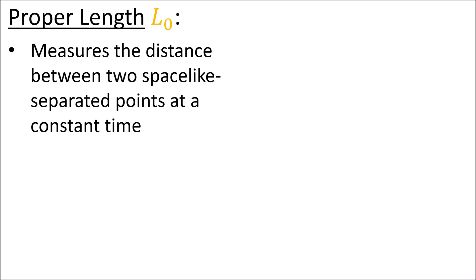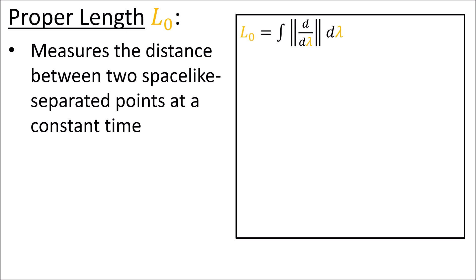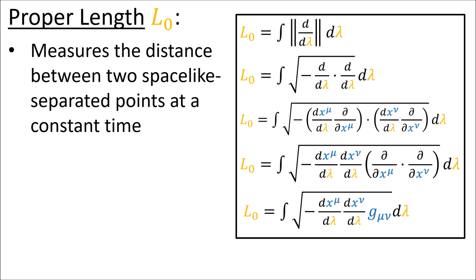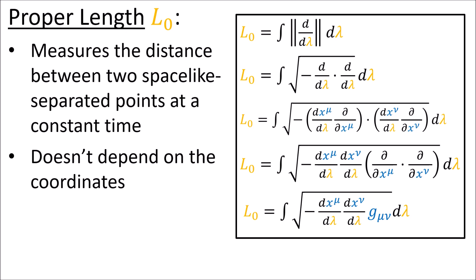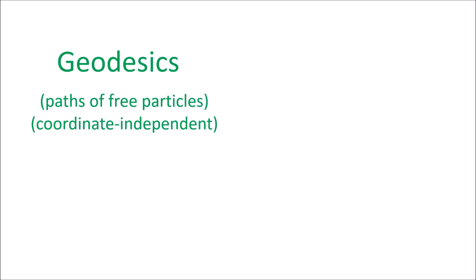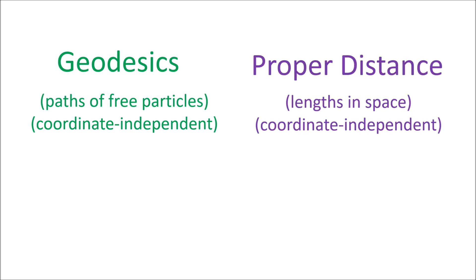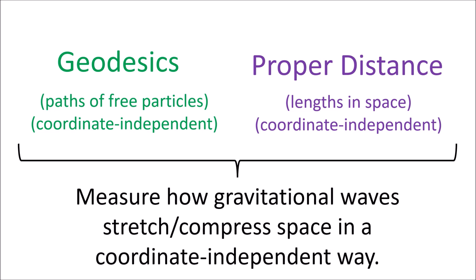Also recall that the proper length L0 measures the distance between two space-like separated points at some constant time, by integrating tangent vectors over the curve between the two points. The proper length quantity also doesn't depend on coordinates — the final result is the same no matter which coordinate system we use. So using geodesics, which are the coordinate-independent paths of free particles, and proper distance, which is a coordinate-independent way of measuring lengths in space, we can measure how gravitational waves stretch and compress space in a coordinate-independent way.